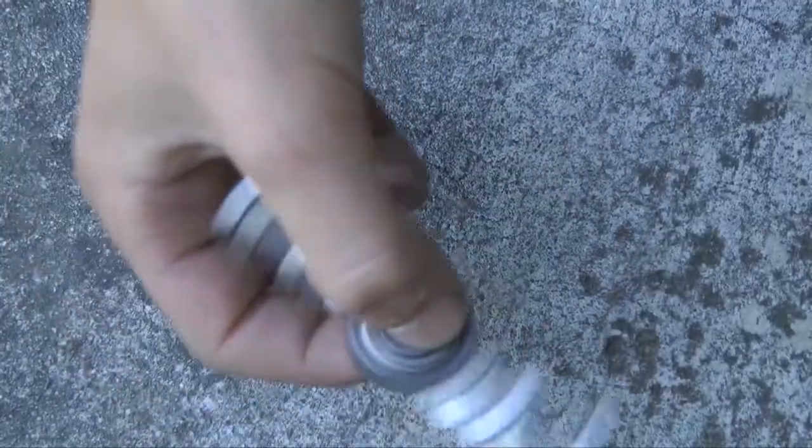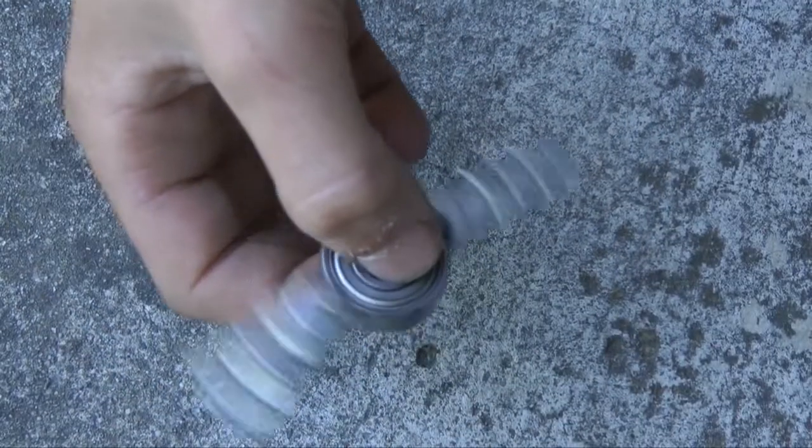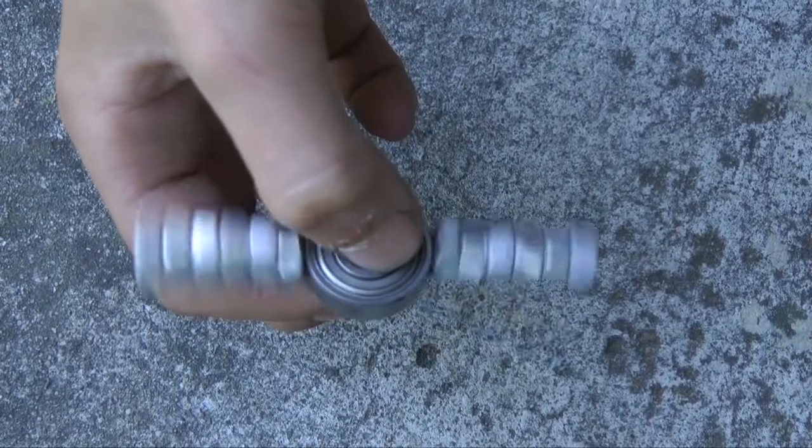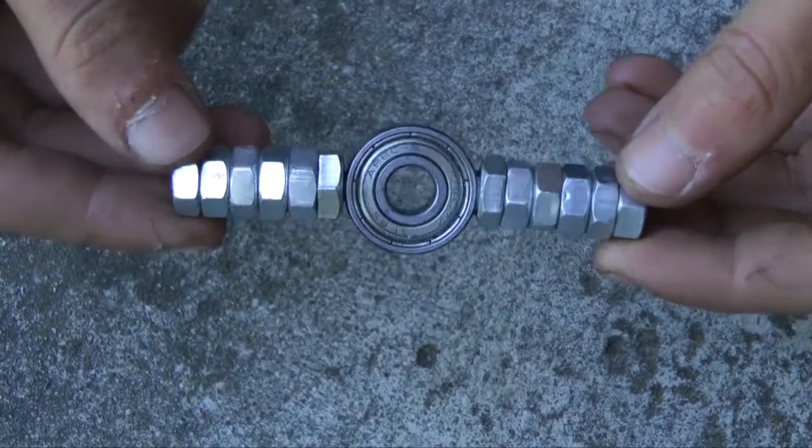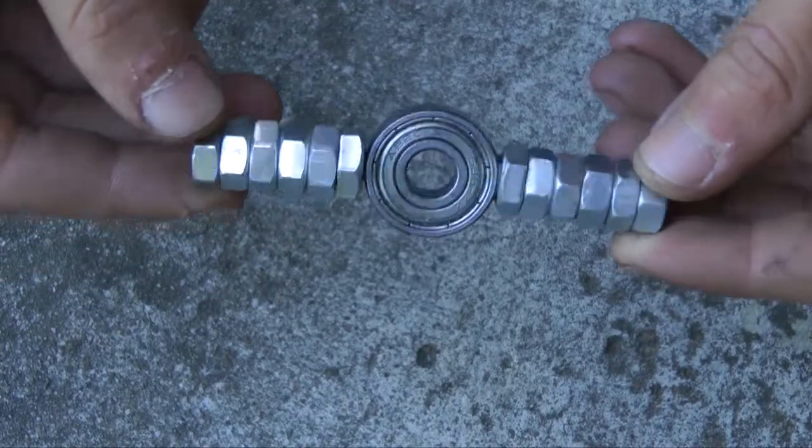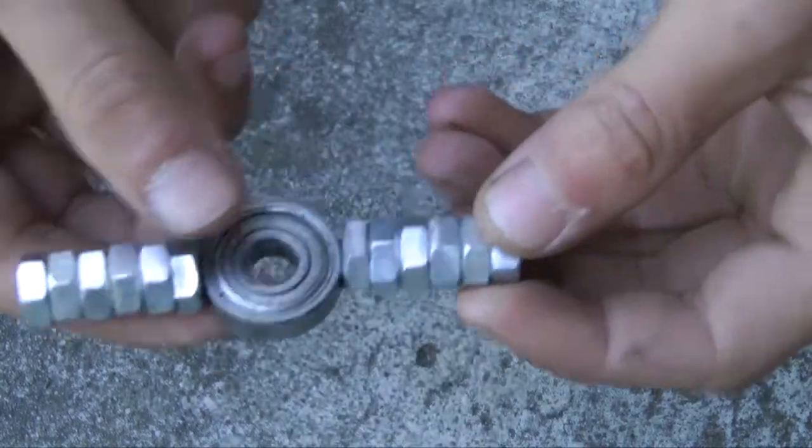Let's give it a spin. To make it spin longer, you can add some lubricant, like some WD-40, to the bearing.